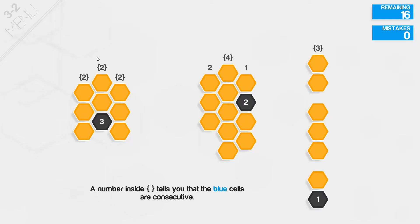A number inside a bracket tells you that the blue cells are consecutive. So let me just finish this real quick. Take that.